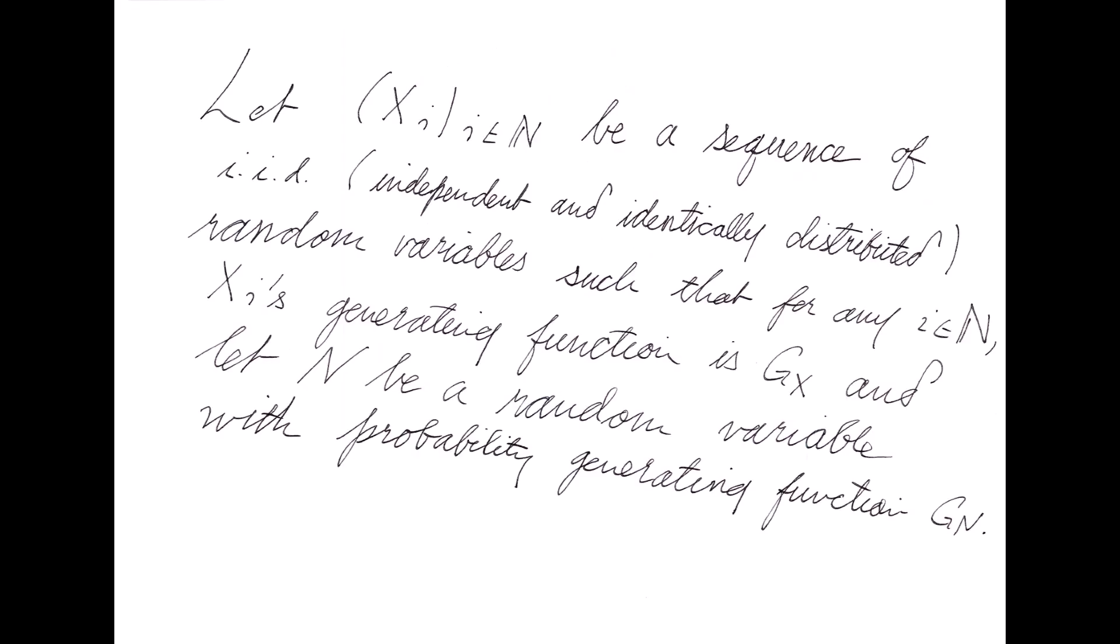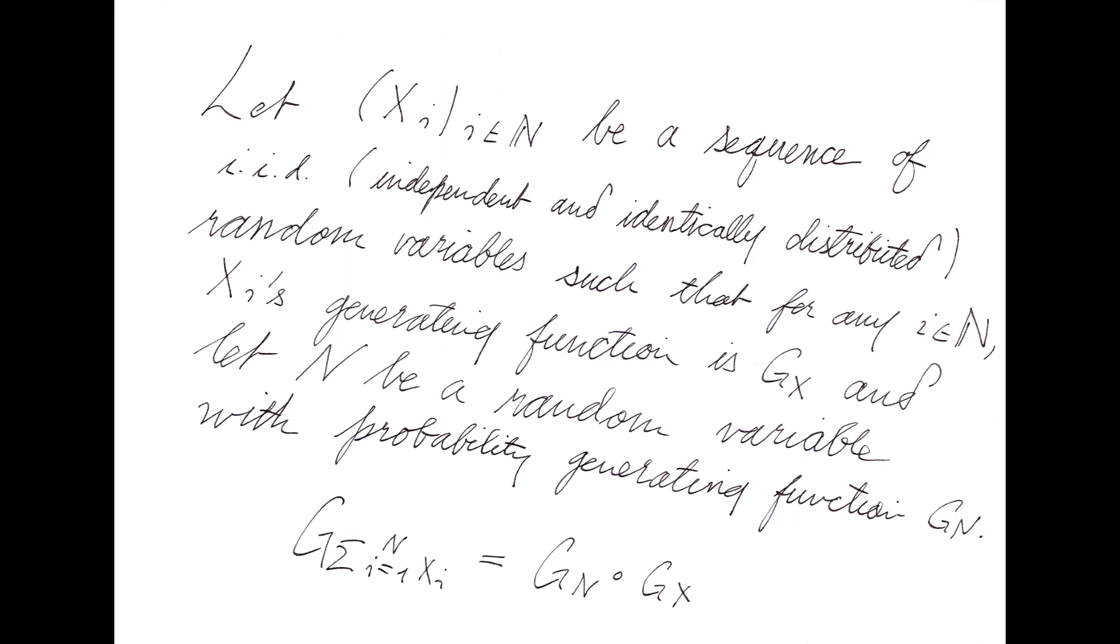A second, perhaps more surprising, result is that if we consider a sequence of iid random variables xi with probability generating function gx and a random variable n with probability generating function gn, then the probability generating function of the sum of the xi's from i equals 1 to i equals n is the composition of g of n with g of x.